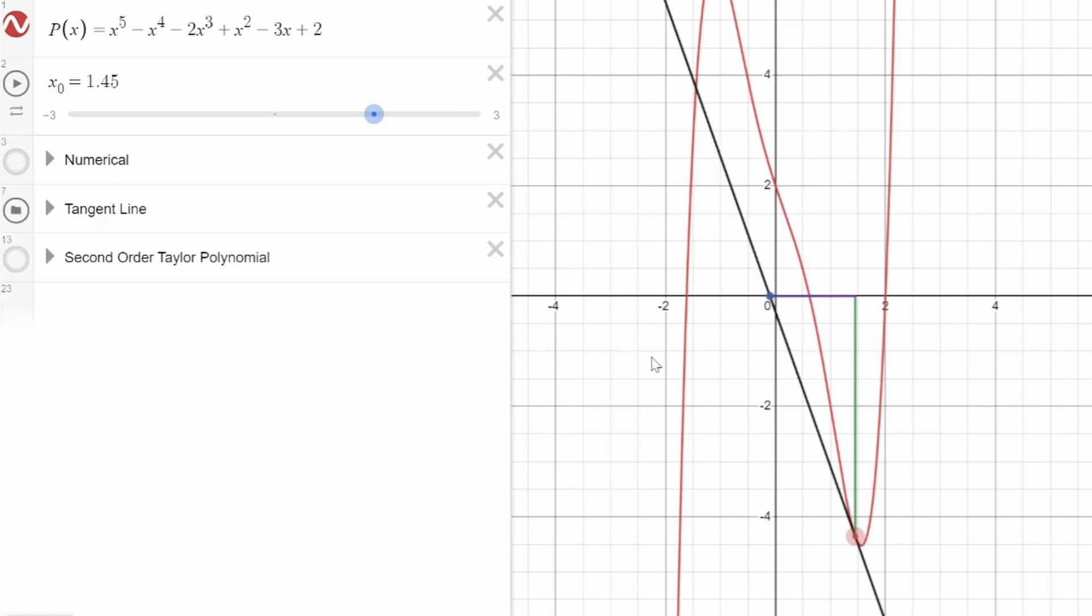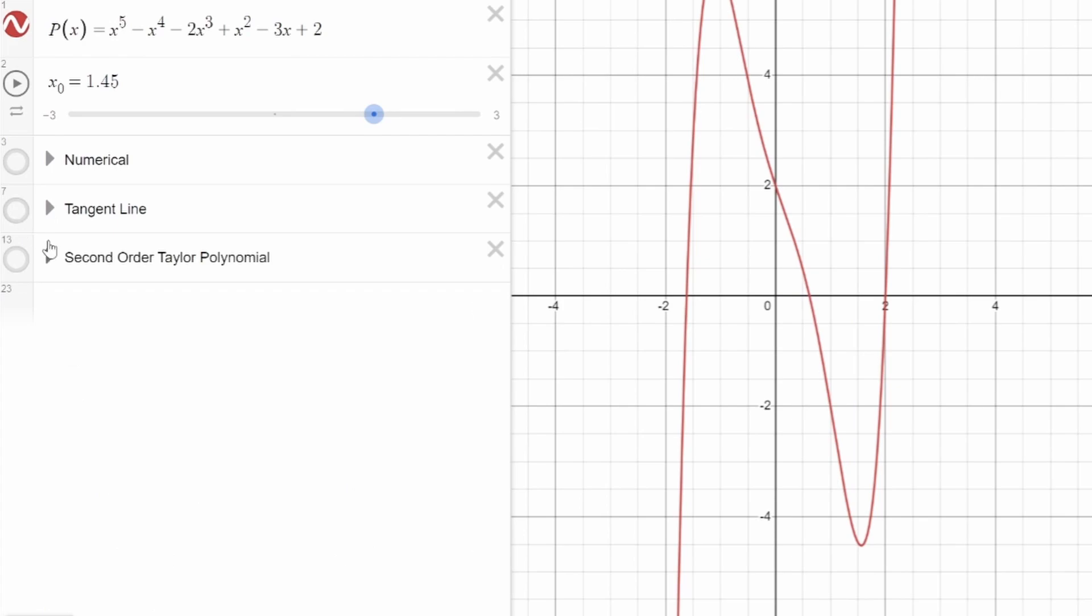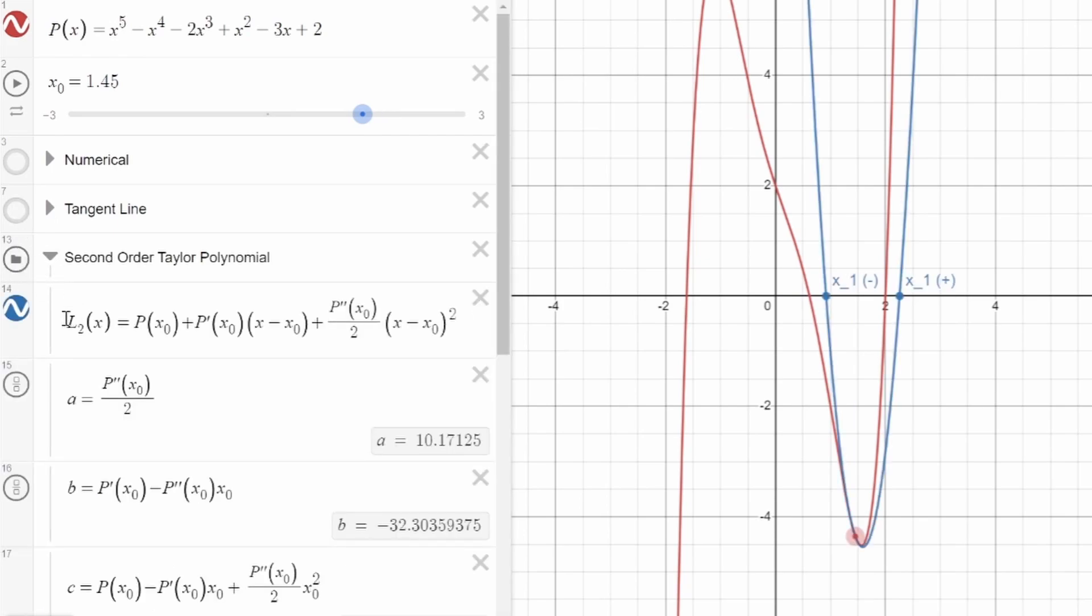What I want to do is extend this new way of looking at Newton's method into second order Taylor polynomials. So instead of cutting off Taylor's formula at a first order approximation, or just a tangent line, what you can do is extend it to a whole polynomial.